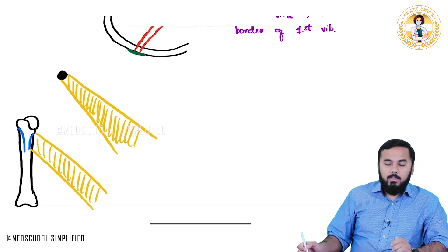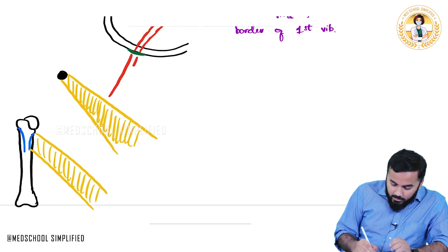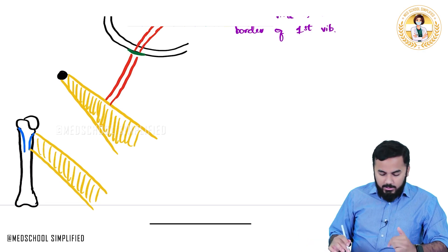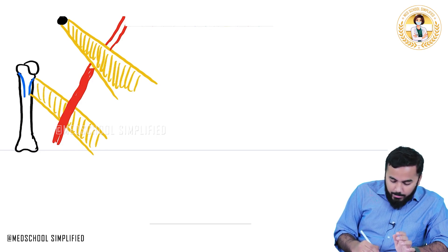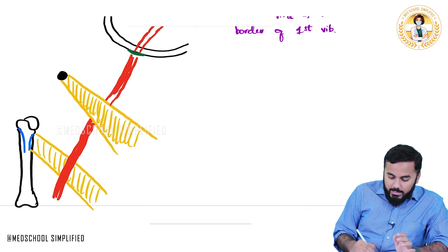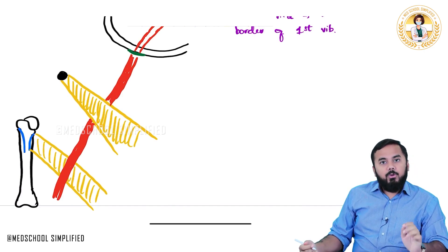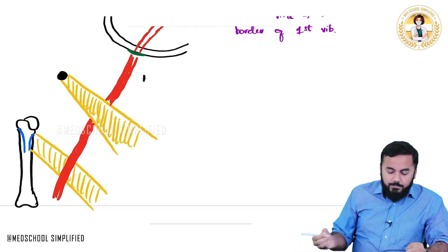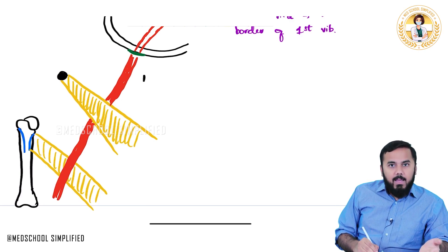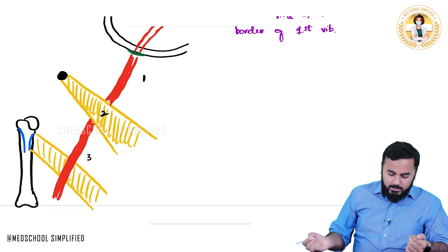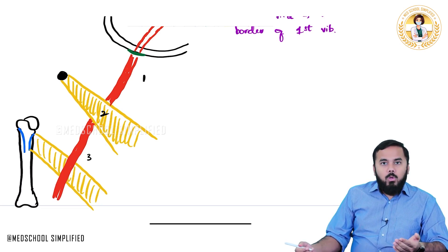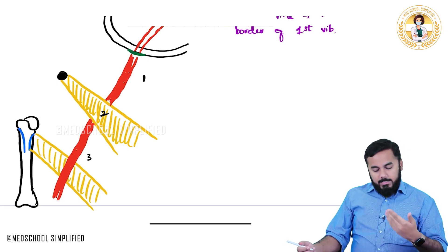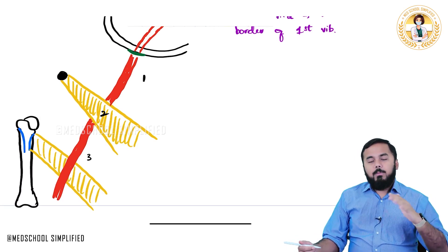From there the axillary artery starts, passing below your pectoralis minor muscle, and after that it passes over your teres major muscle. In this way the axillary artery is divided into three parts: the first part is above the pectoralis minor muscle, the second part is behind the pectoralis minor, and the third part is after the pectoralis minor.